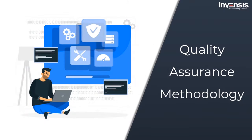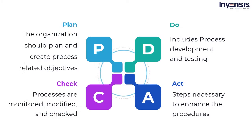Let us move on to our next topic and talk about quality assurance methodology. Quality assurance methodology uses a structured cycle known as the PDCA cycle, also often known as the Deming cycle. The phases of this cycle are: plan, do, check, act. These stages are done to guarantee that the organization's procedures are assessed and improved regularly.